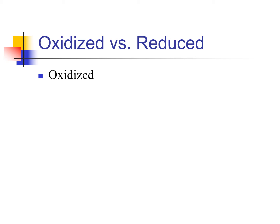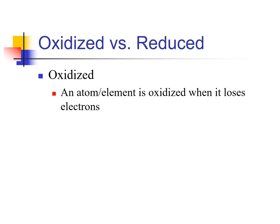An atom or element is oxidized when it loses electrons. Think about what this means in terms of charge — electrons are negative. So if something loses electrons, it becomes either less negative or more positive. If the oxidation number goes from negative four to negative two, or from plus two to plus four, that would be losing electrons, meaning that atom was oxidized.